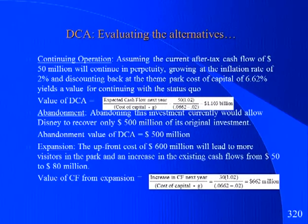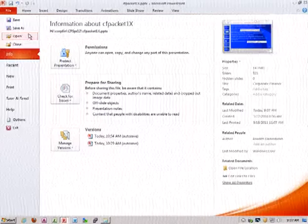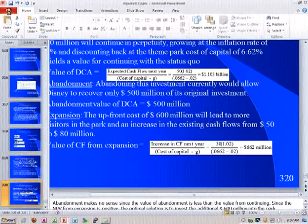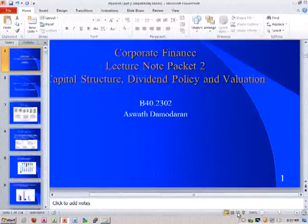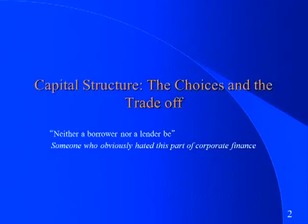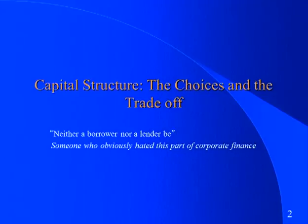Let's shut this packet down and start on the second one. This packet covers the rest of the class: financing, dividend policy, and valuation. Let's start with the financing principle. Up until now, when we looked at cost of capital, we took the debt ratio as a given — for Disney it was about 27% debt, 73% equity. We didn't stop and ask: was that the right mix? What we're going to do now is ask whether that was the right thing for Disney to do — should they have used more debt or less debt?